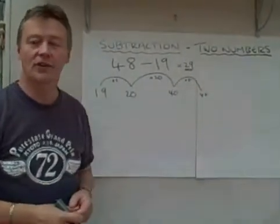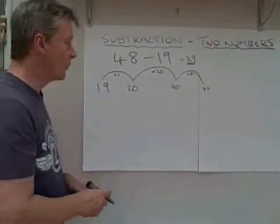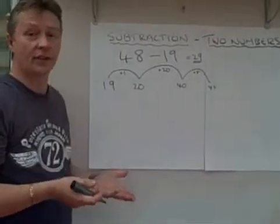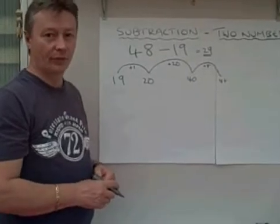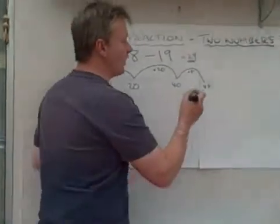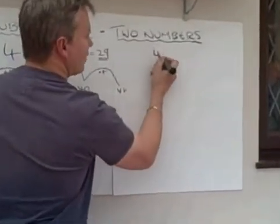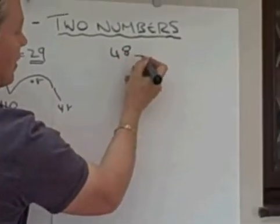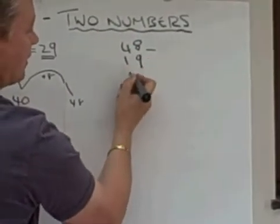The second method is a more formal method, which is where, like before when we did it in addition, we put the two numbers one above the other. So I'm going to move over here and rewrite it as 48 take away 19.